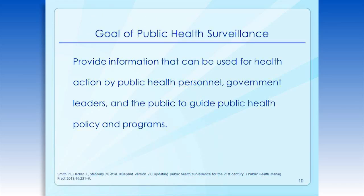Let's move on to why we do surveillance and what we're trying to accomplish. The goal of public health surveillance is to provide information that can be used for action and guidance. We'll look at some examples of surveillance leading to action later in this presentation, but it's important to keep in mind that action is an important outcome of any surveillance program. You need to understand what you're going to do with the data that you have.